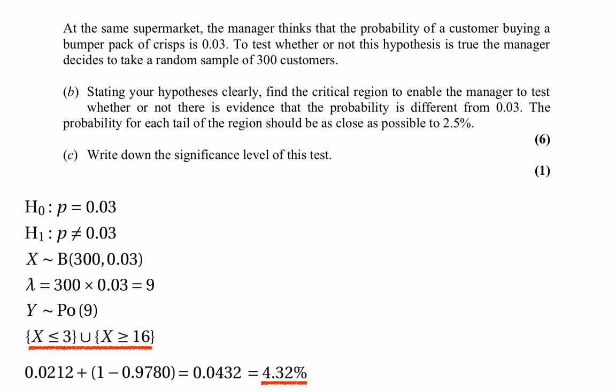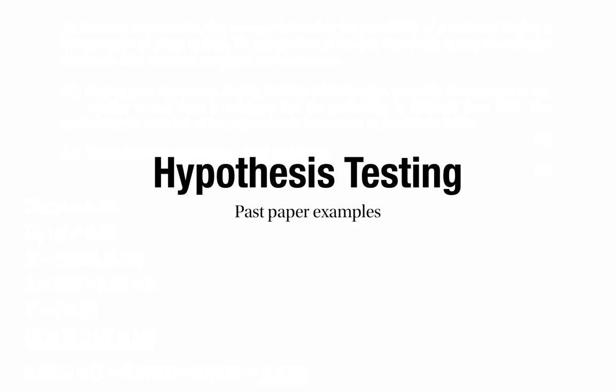Notice that this question was slightly different because we had to use an approximation before finding the critical region. But essentially we just look at the table for the approximating random variable and locate the 2.5% and 0.975 thresholds — there's nothing fundamentally different about it. That's the end of this video covering three past paper questions on hypothesis testing. I hope you found it useful.